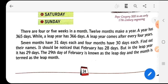Seven months have 31 days each and four months have 30 days each. Find out their names. It should be noticed that February has 28 days. Now you know that seven months have 31 days and four of the months in a year have 30 days. Now you have to find out which months have 31 days and which months have 30 days. It should be noticed that February has 28 days, but in the leap year has 29 days.